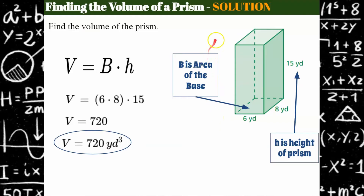Let's take the time to talk about how surface area and volume are different. When I'm finding the volume, that's the interior space — how much water could this hold? How much sand? Maybe it's a box of cereal or a box of rice. Volume is the capacity of the interior of the prism.